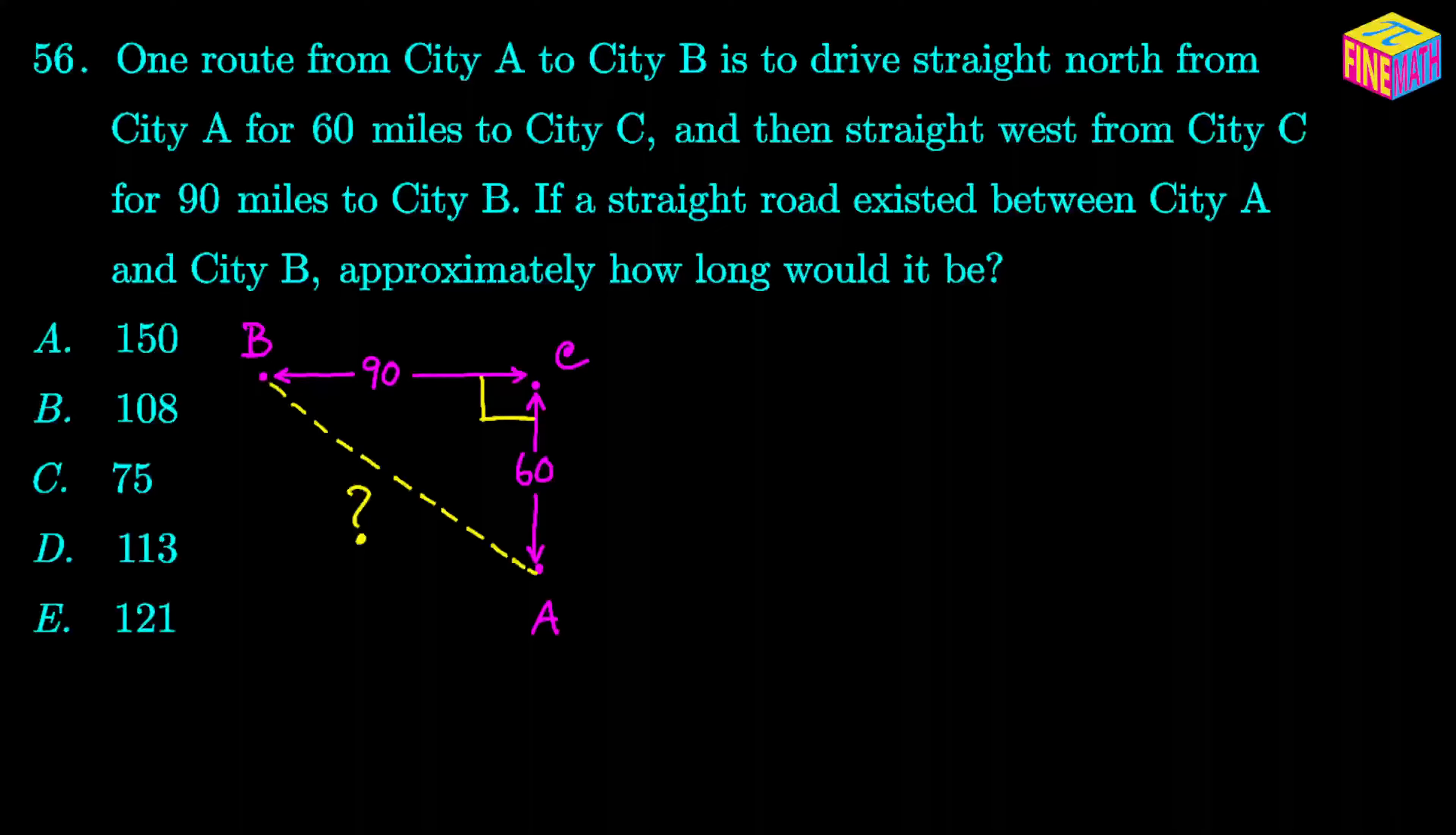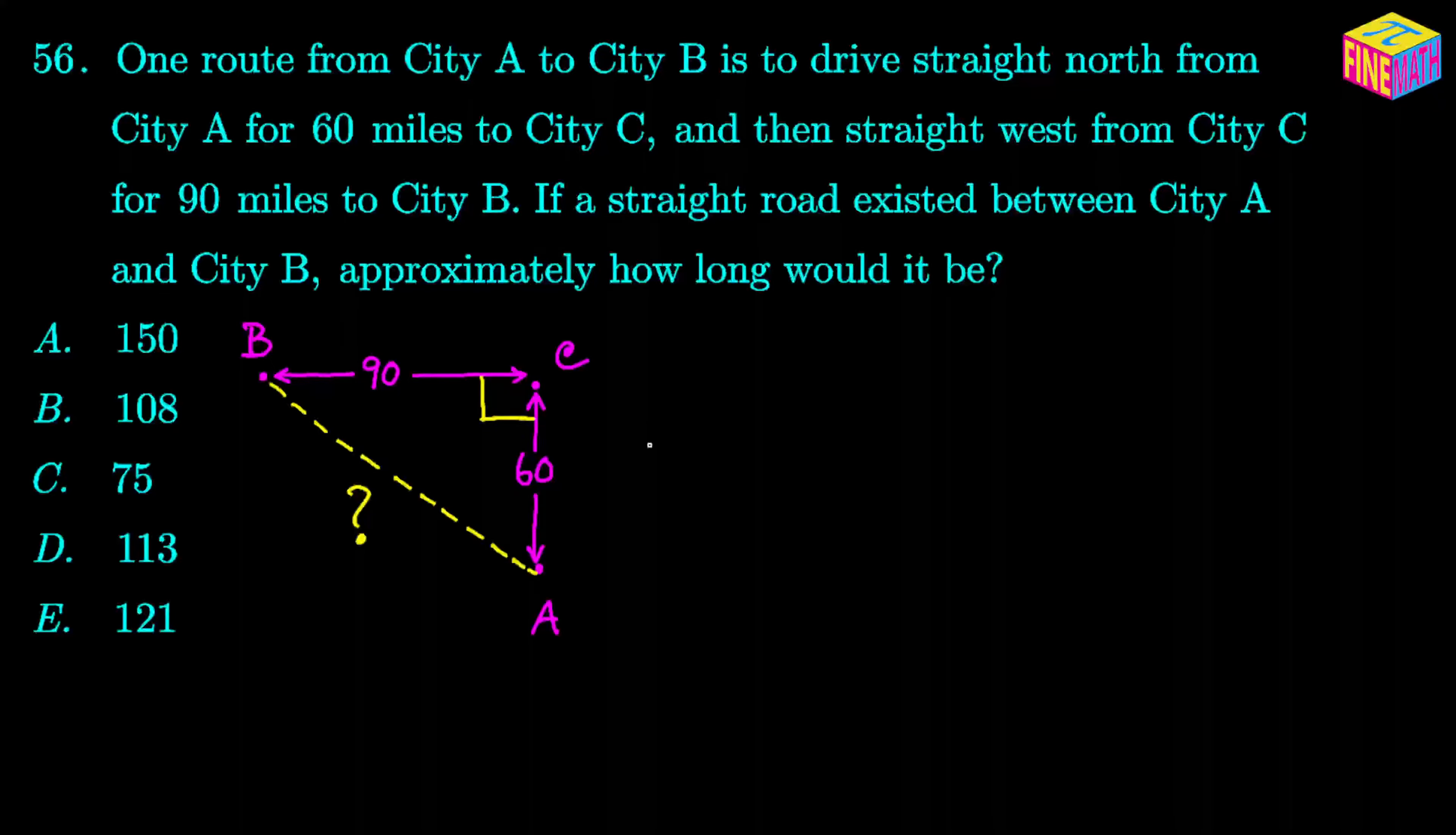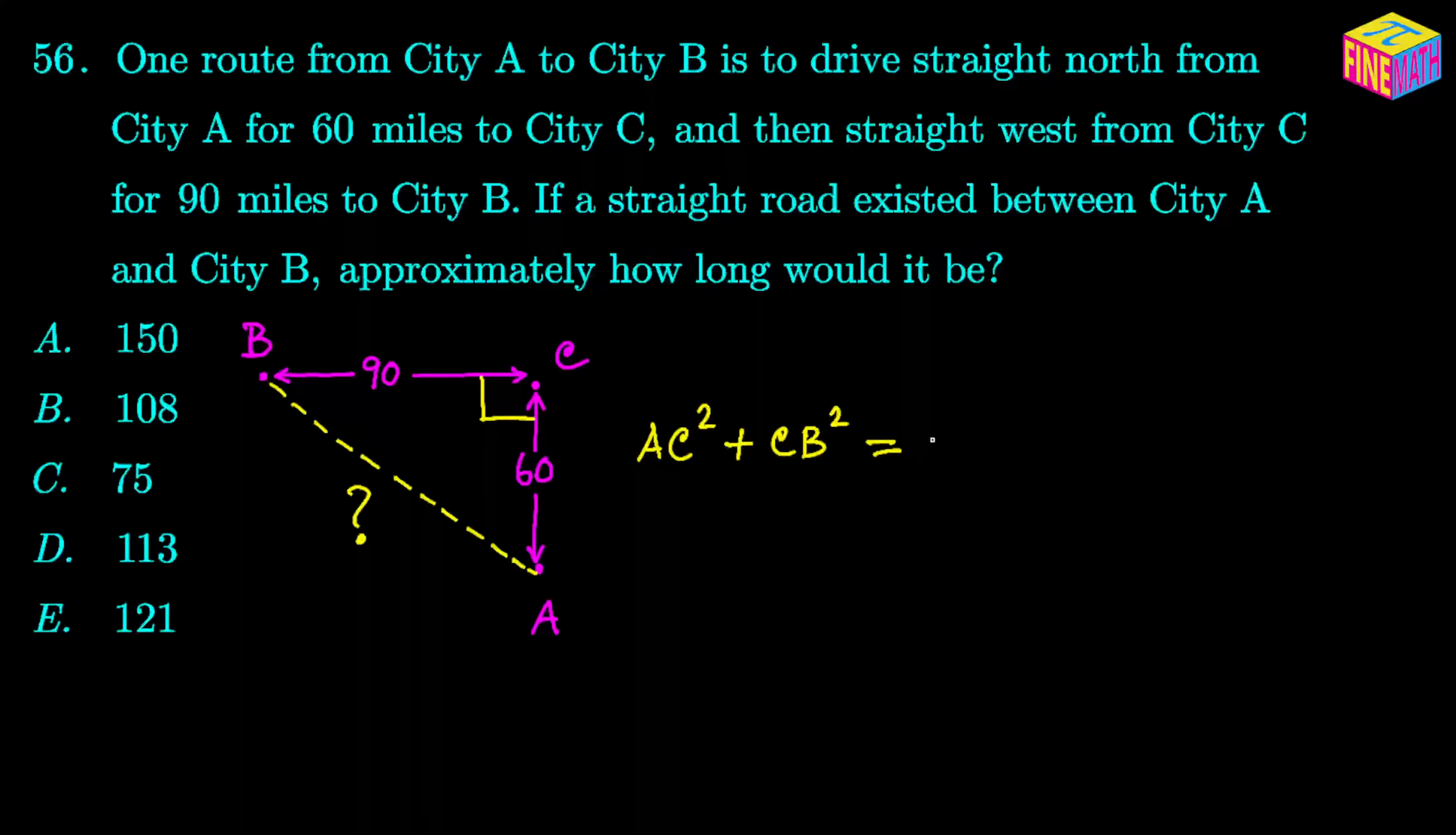We know from the Pythagoras theorem that hypotenuse is equal to... In this case, we can write it like this: AC squared plus CB squared equals AB squared. That's the Pythagoras theorem.